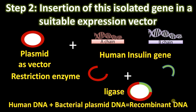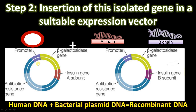We now have a recombinant DNA molecule — human DNA joined to bacterial plasmid DNA — forming a recombinant DNA. That is why this technology is called recombinant DNA technology: two DNAs from different sources are recombined to form a new DNA. Since our intention is expression of the insulin gene, the vector must contain control elements like a promoter. In insulin production, the insulin gene is inserted close to a beta-galactosidase gene, forming a fusion protein.